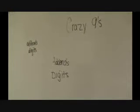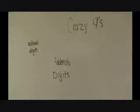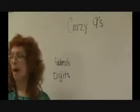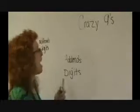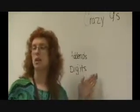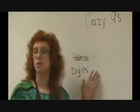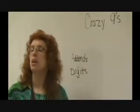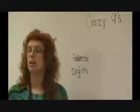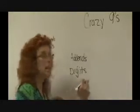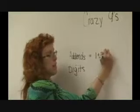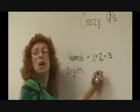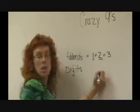Good recording. So today we're going to learn a little math game called Crazy Nines. There's two things I want to talk about. First, it's important for you to know addends are when two numbers are added together to make another number.